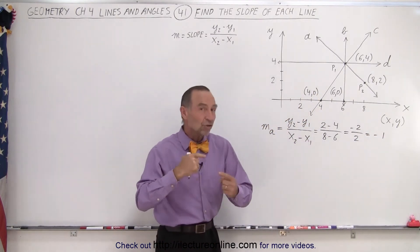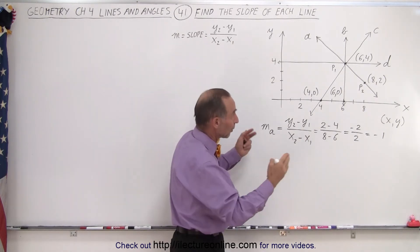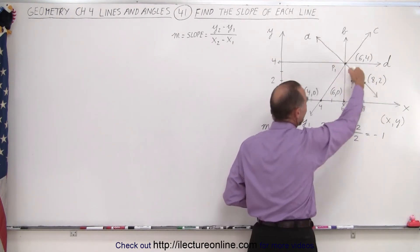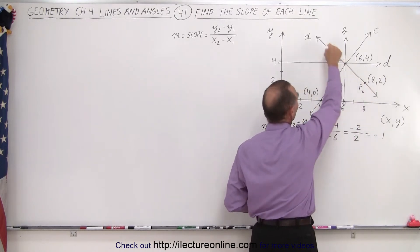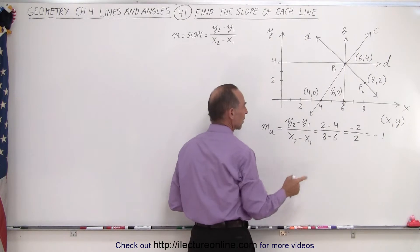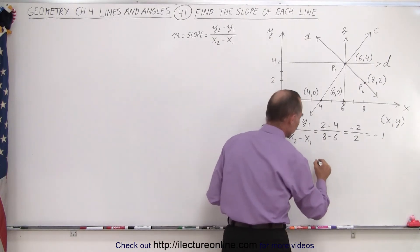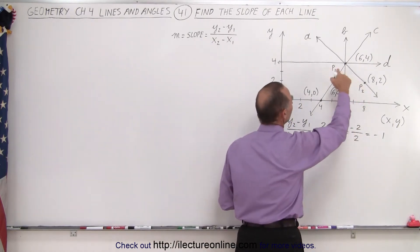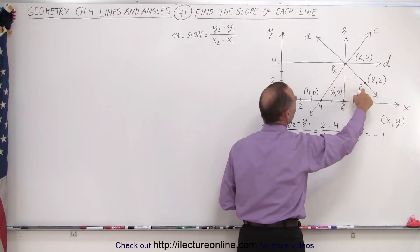What if I had interchanged those? By the way, if we look at it, it does look indeed like the slope is negative because as I go to the right on line a, I drop in y value. So now let's interchange the two. Now I'll call this point two and call this point one.